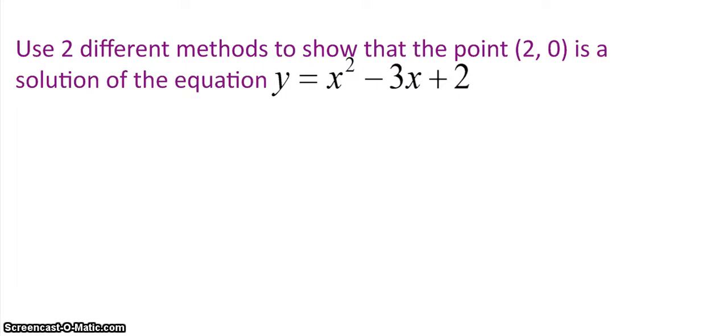This should be kind of a review from a second year algebra course. Use two different methods to show that the point (2, 0) is a solution of the equation y = x² - 3x + 2. Now, this question could also be phrased a little bit differently, and that is, is the point (2, 0) a solution of this equation?